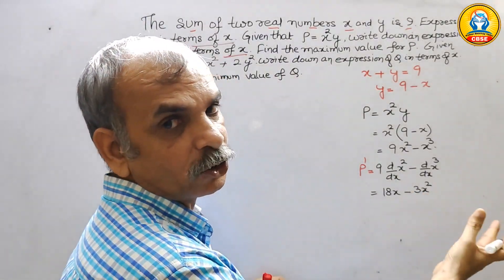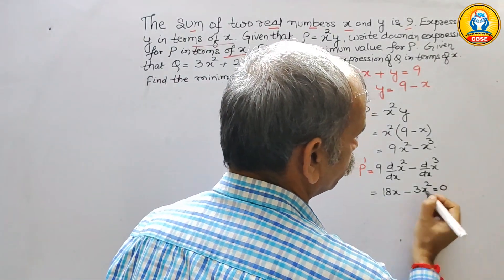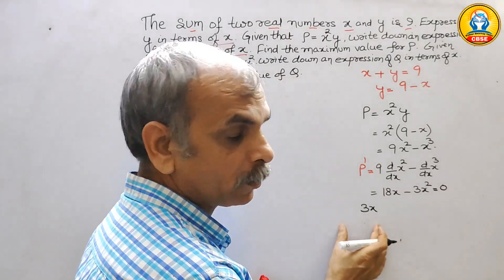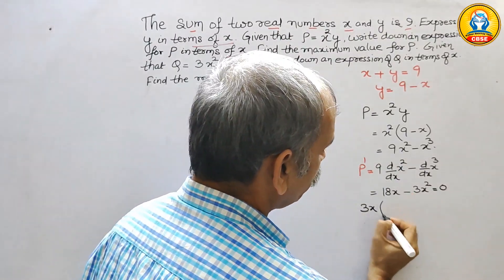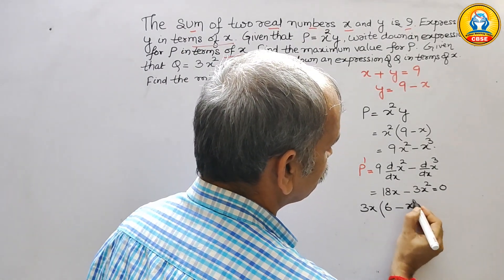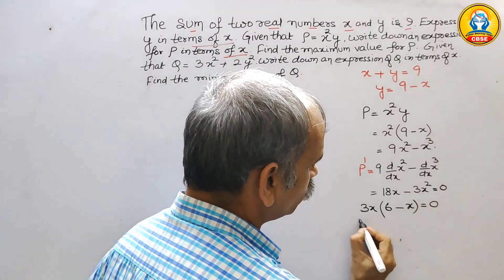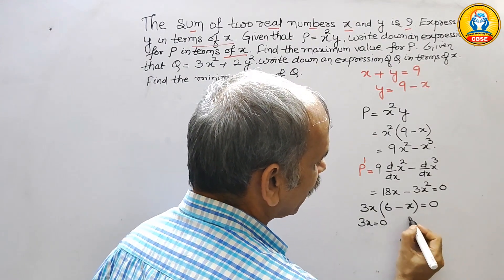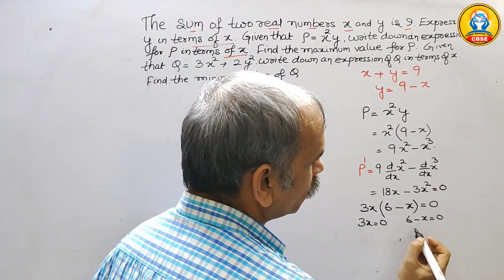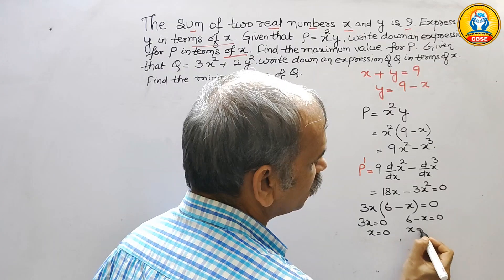Now we will make p dash equal to 0 to find the x value. So 18x minus 3x squared equals 0. Here 3x is common, giving us 3x times 6 minus x equals 0. So either x is equal to 0 or x is equal to 6.